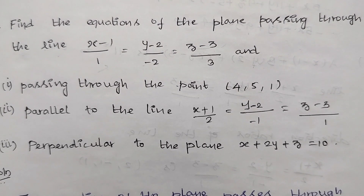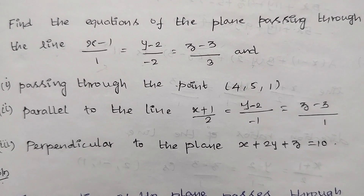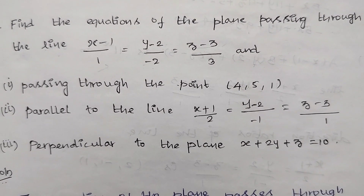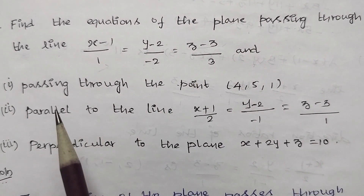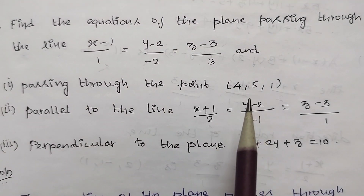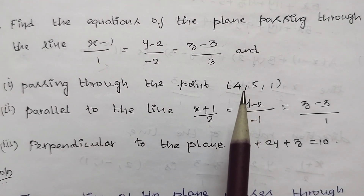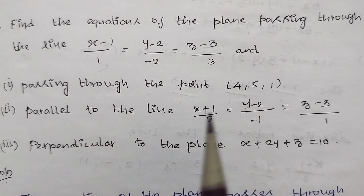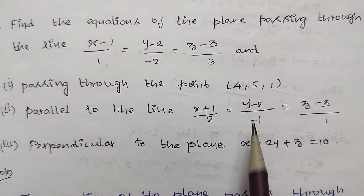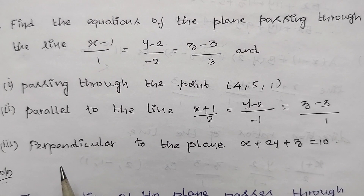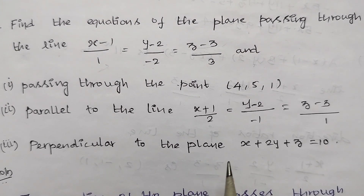We can get the equation of the plane passing through the line. Subdivision 1: passing through a point. Subdivision 2: required plane where the line is parallel. Subdivision 3: required plane where the plane is perpendicular.